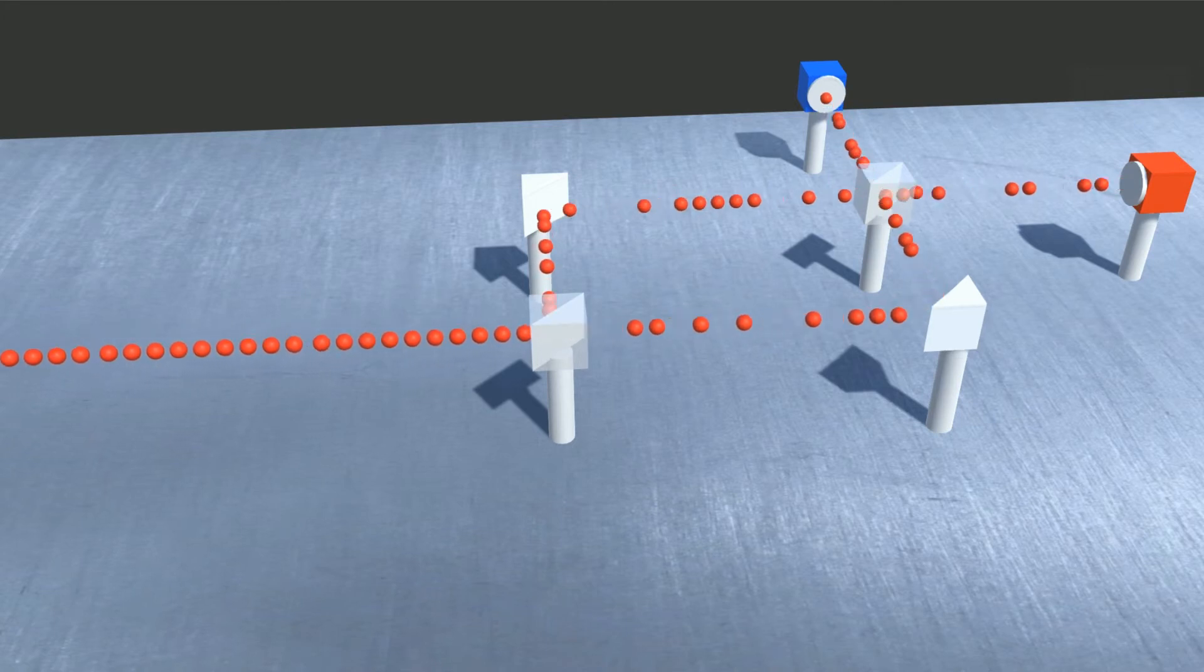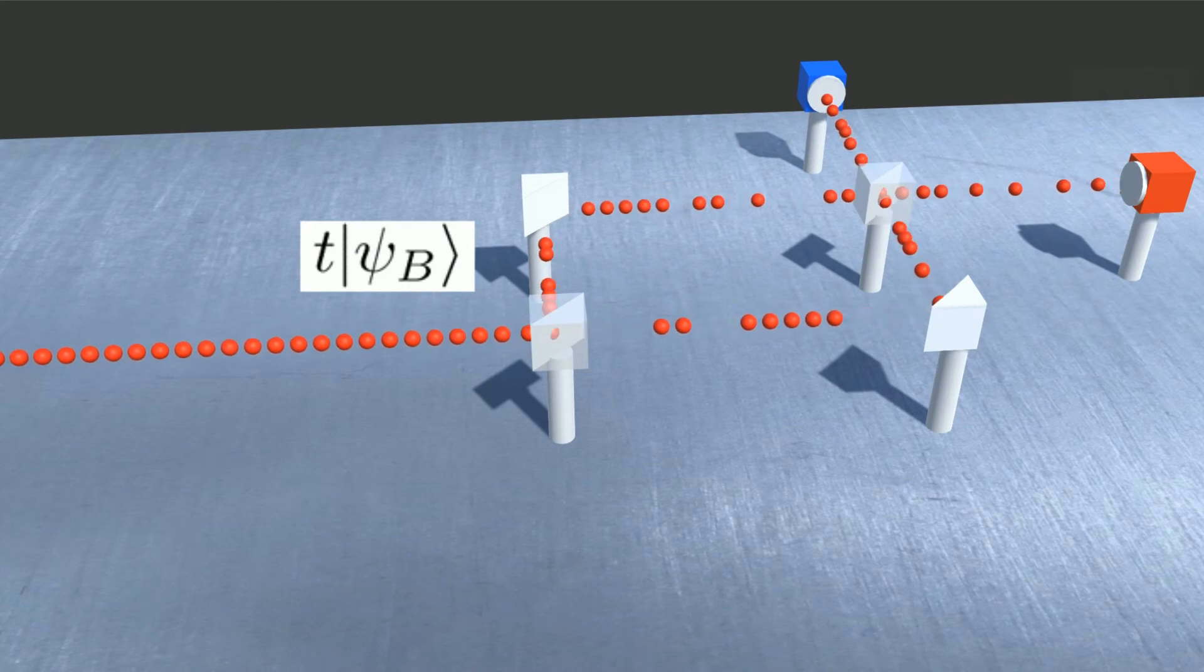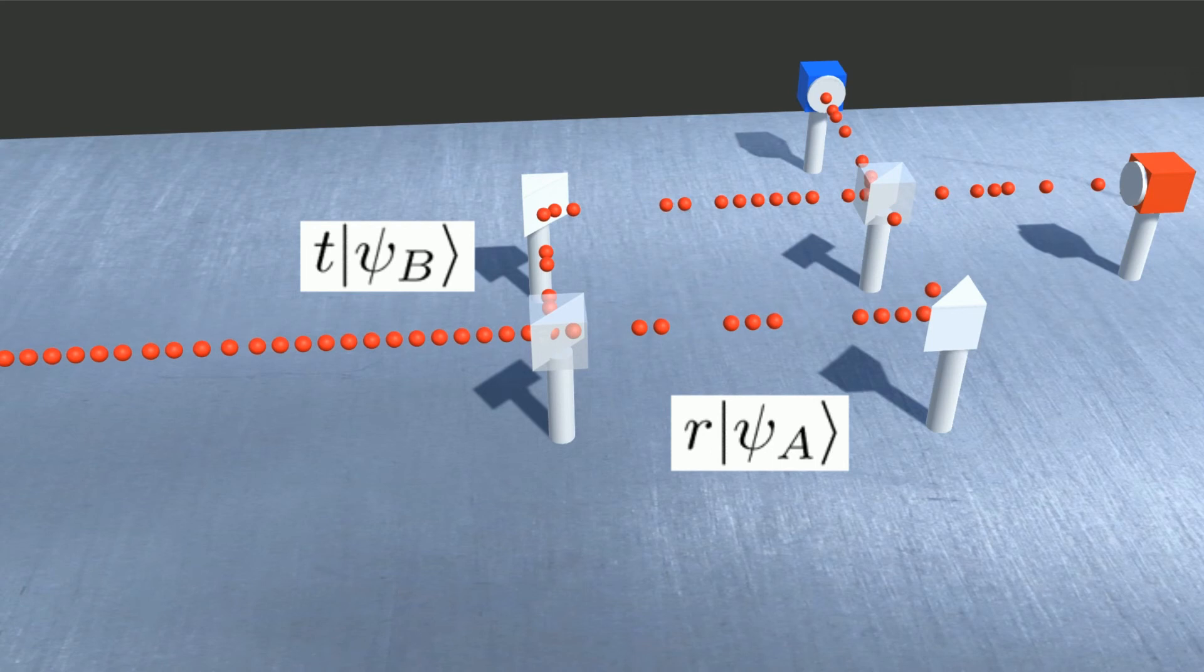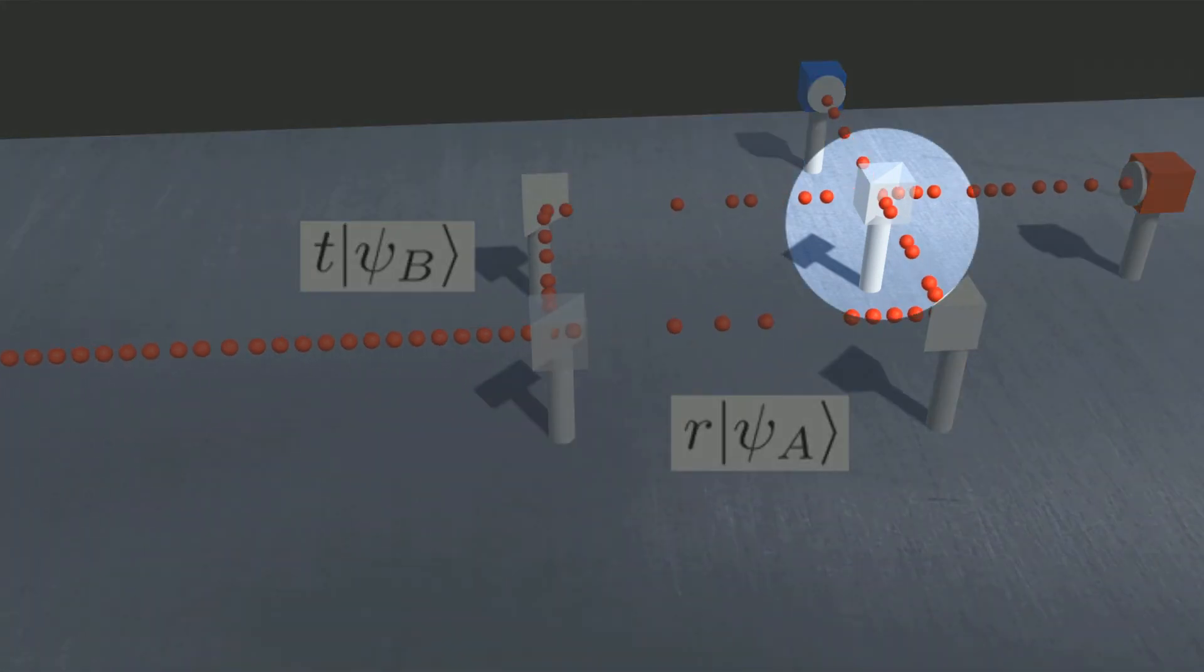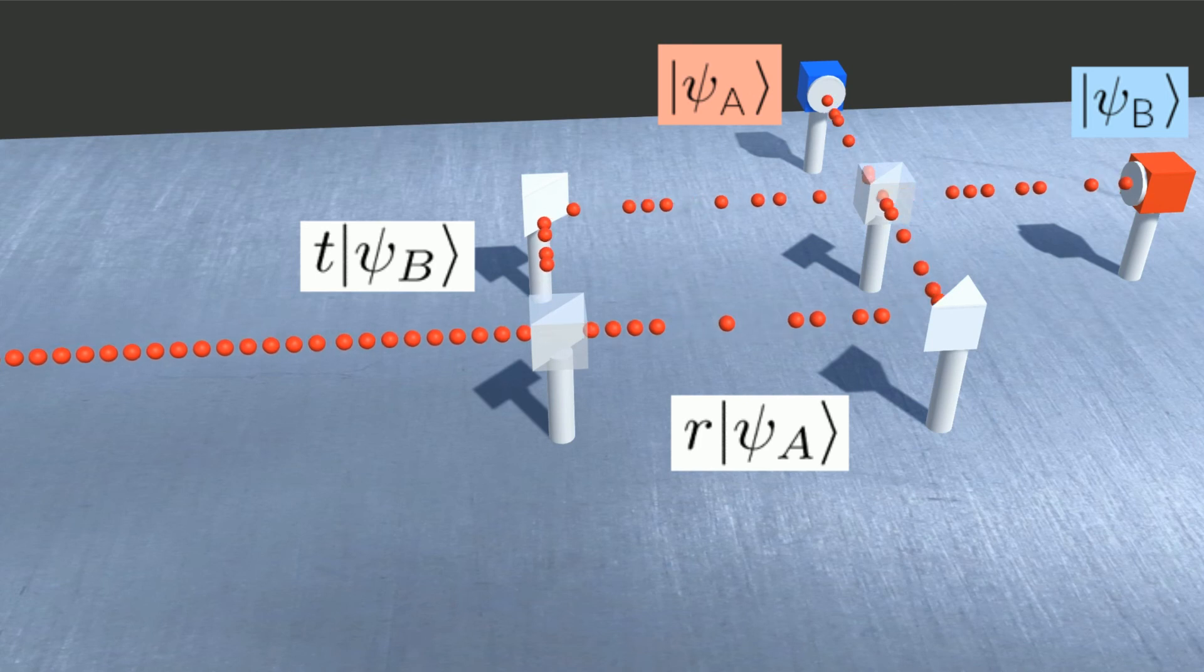As the particle enters the beam splitter, it actually becomes a superposition of states. One state being it traveled down the upper path and the other state traveling down the lower path. These states then recombine before reaching our detectors. A phase shift can be imparted on our upper path length superposition, leading to the wave-like behavior.